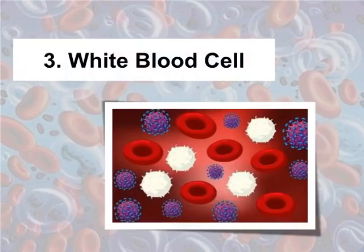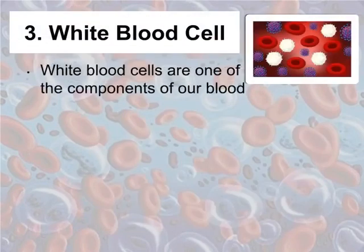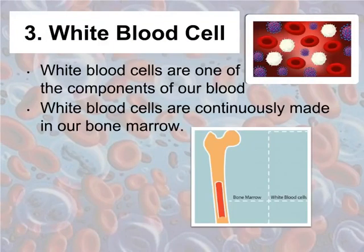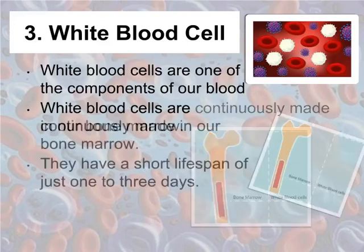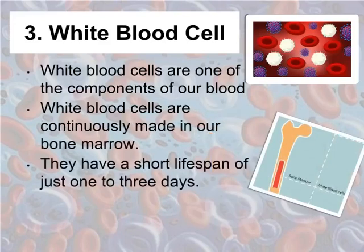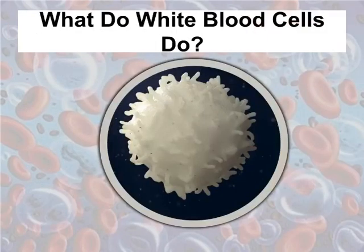The third component of blood is white blood cells, also called WBCs. White blood cells are continuously made in our bone marrow. They have a short lifespan of just one to three days.